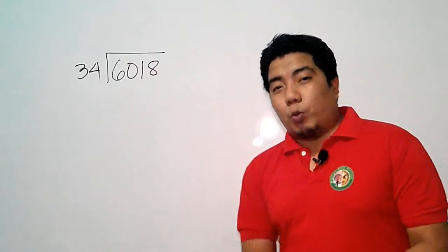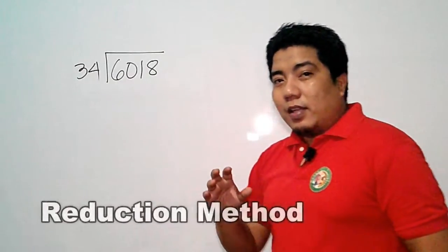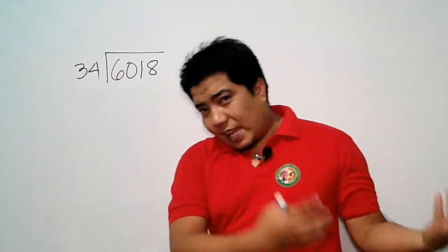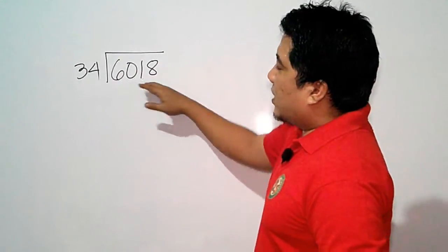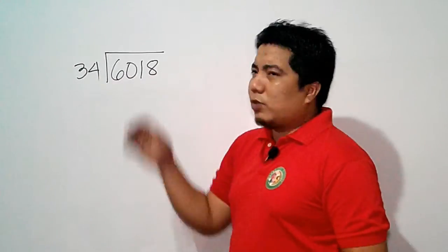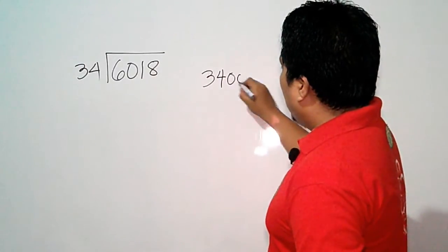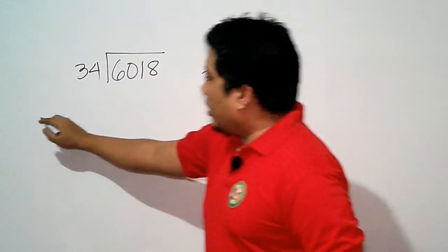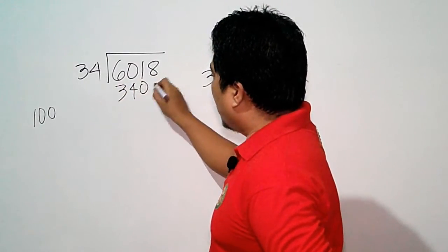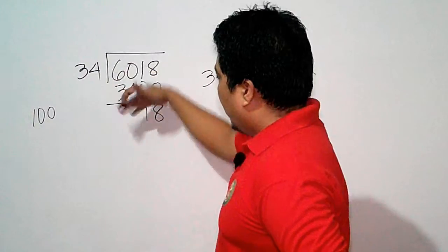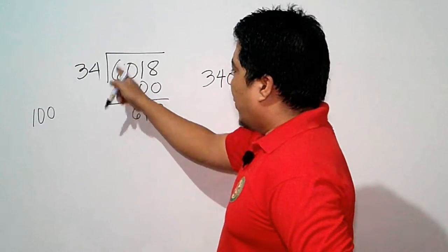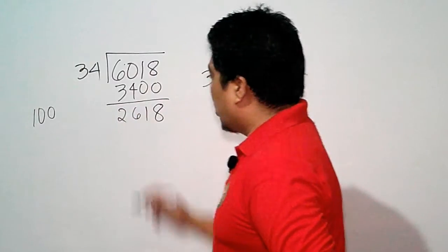The first method is the reduction method, which uses powers of 5s and 10. For 6,018 divided by 34: multiplying 34 by 100 gives 34,000, but we need to subtract from 6,018. So 6,018 minus 3,400 gives 2,618. However, this is still large. Next, we ask: how many 34s are in 2,618? Let's try 50: 50 times 34 is 1,700. Subtracting 1,700 from 2,618 gives 918.